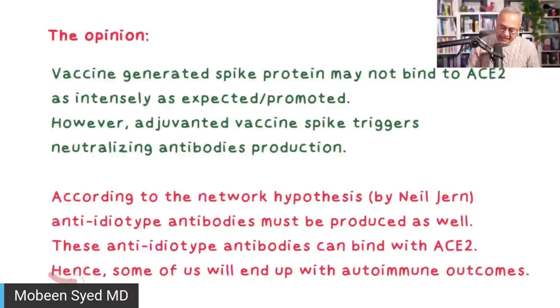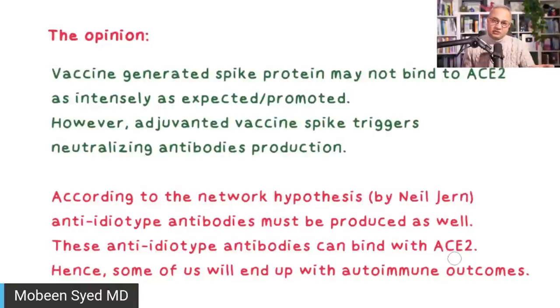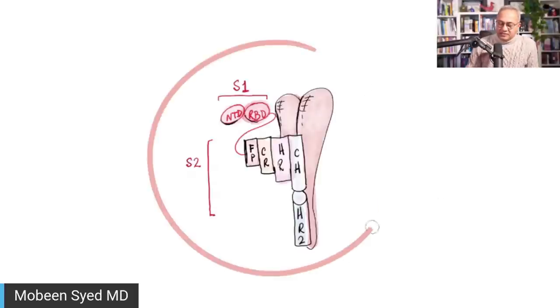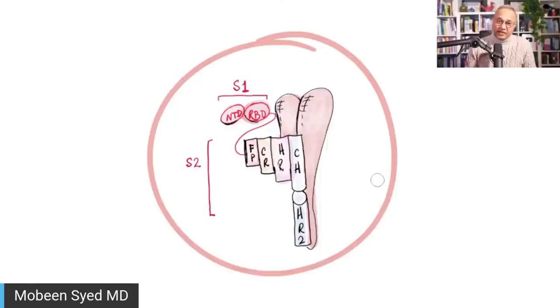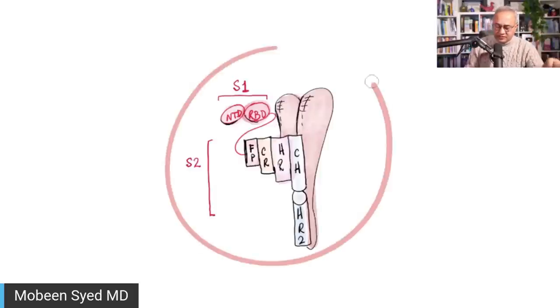Hence, some of us will end up with autoimmune outcomes. It is clear that not everyone develops thrombosis or myocarditis, but some do. Similarly, not everyone develops long-term vaccine injury — just like some people develop allergies and others do not. I am focusing on the vaccine to show physicians how to look at the autoimmune part of it.